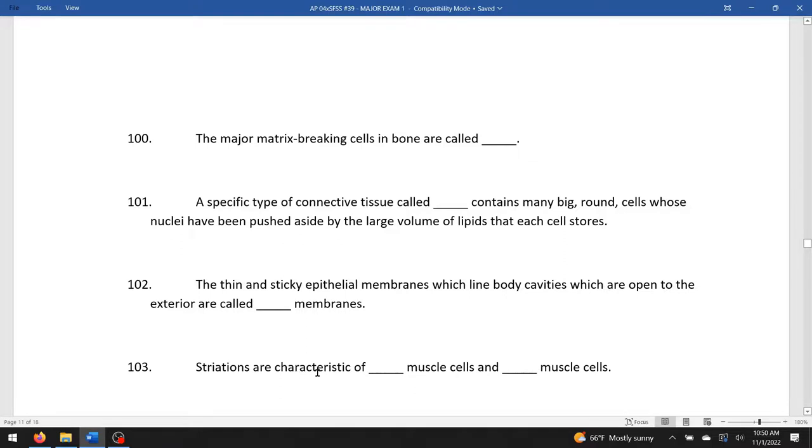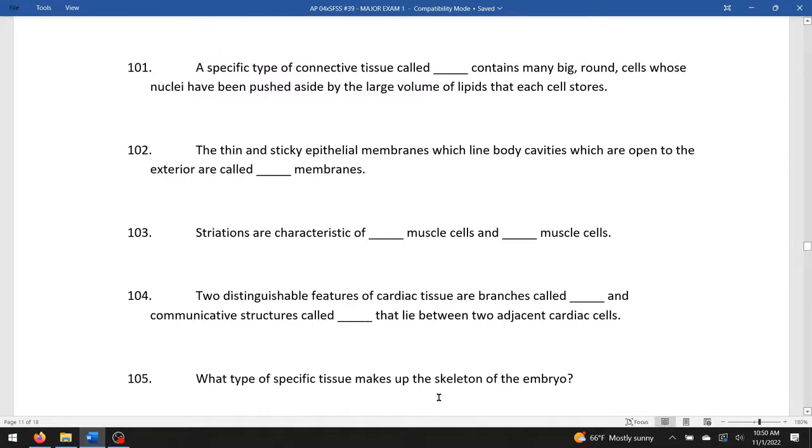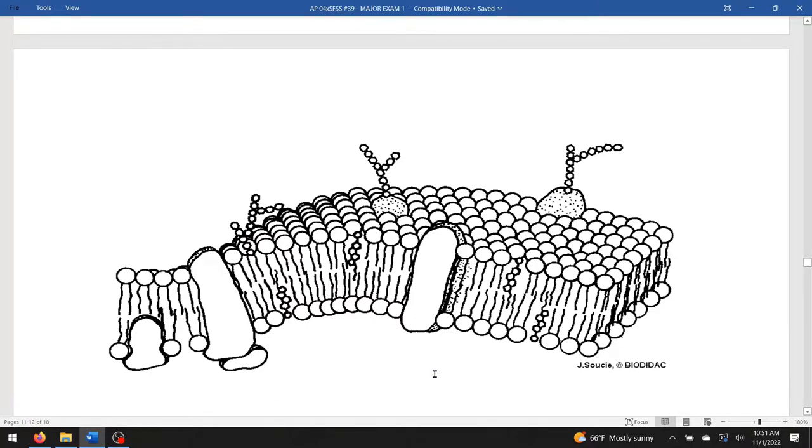Striations, stripes, are characteristic of skeletal muscle cells and cardiac muscle cells. Two distinguishable features of cardiac tissue are branches called bifurcations and communicative structures called intercalated discs that lie between two cells. What type of tissue makes up the skeleton of the embryo? Hyaline cartilage.